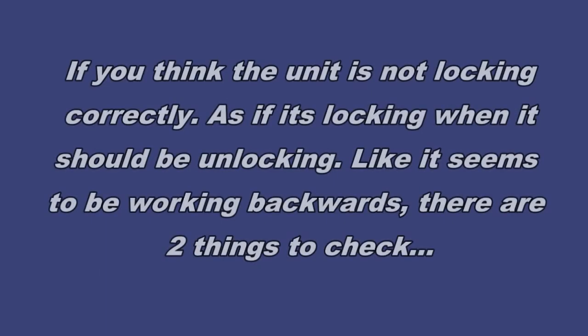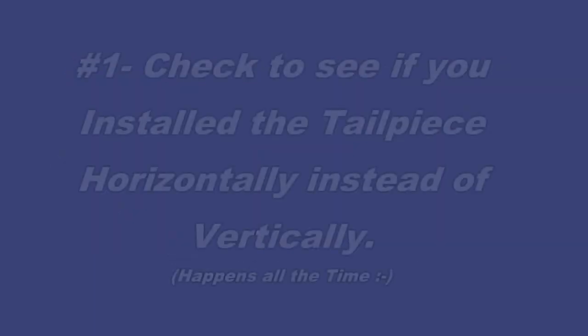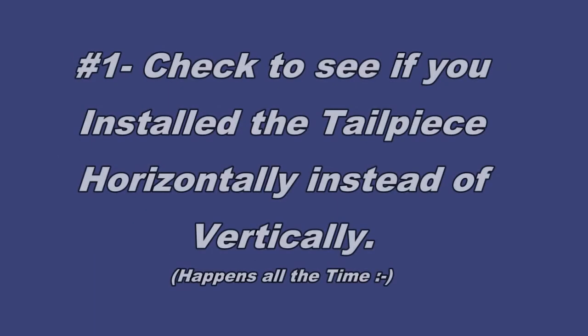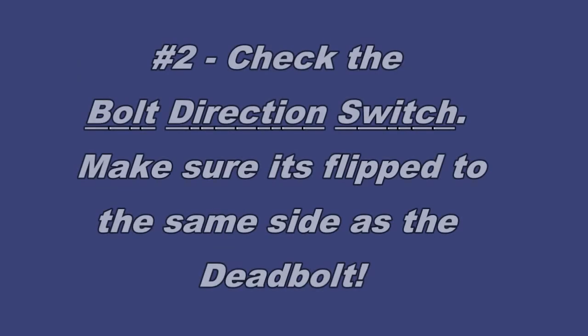If you think the unit is not locking correctly, as if it's locking when it should be unlocking, like it seems to be working backwards, there are two things to check. First, check to see if you installed the tailpiece horizontally instead of vertically. It happens all the time. Check the bolt direction switch. Make sure it is flipped the same direction as the deadbolt.